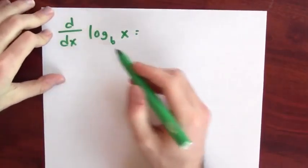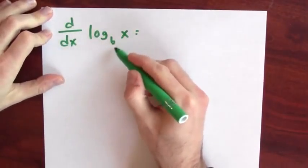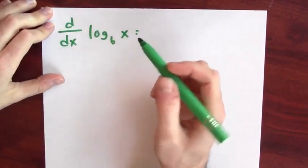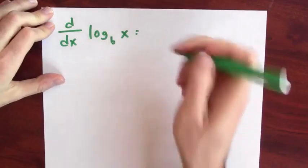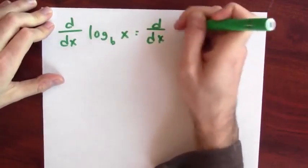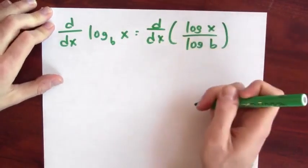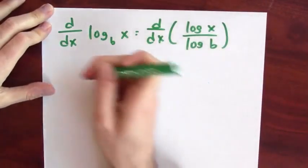At this point, we can also handle logs with other bases. So let's suppose I want to differentiate log of x base b. This is the number that I'd raise b to to get back x. Well, let's use a change of base formula for log. This is the same as the derivative of the natural log of x over the log of b.